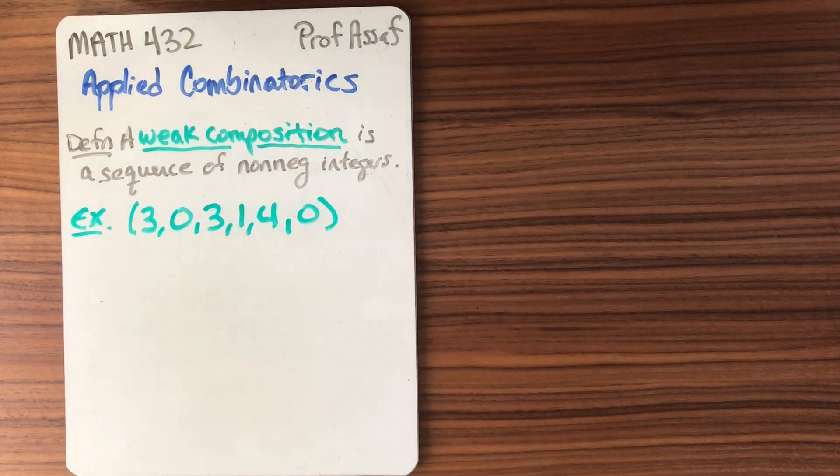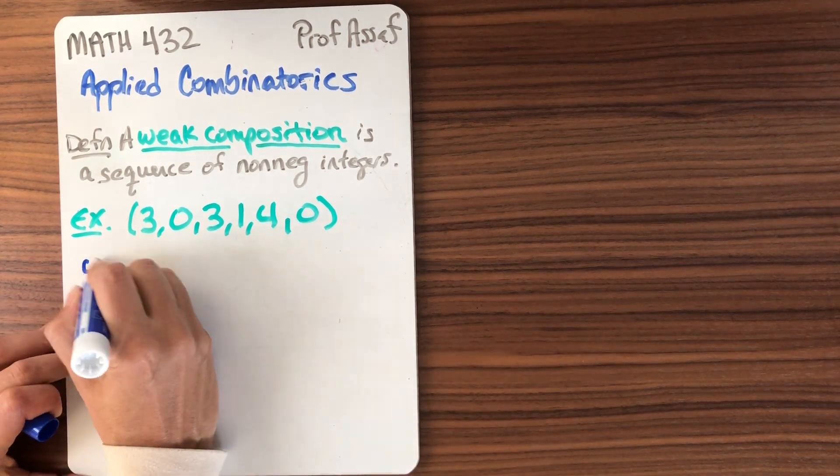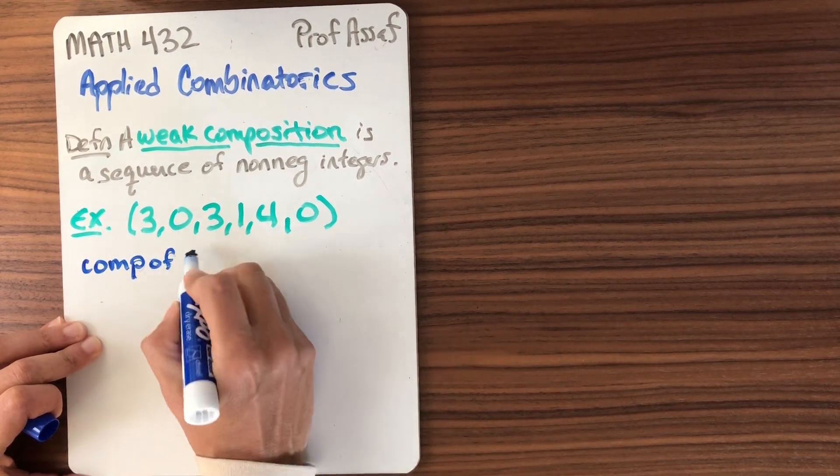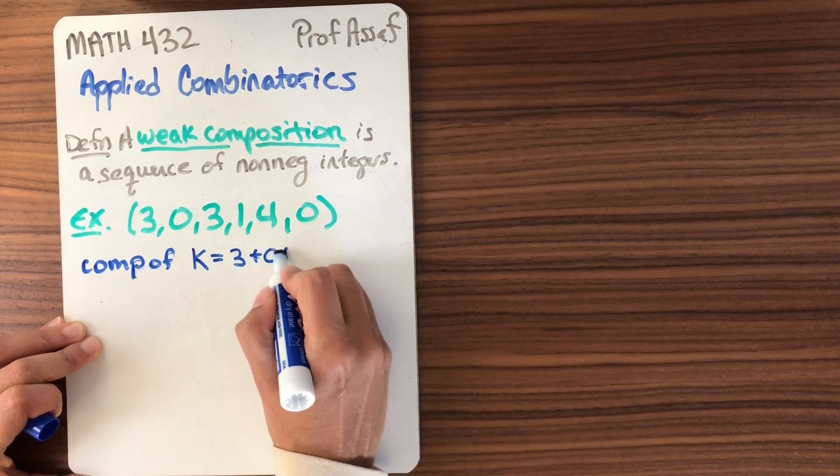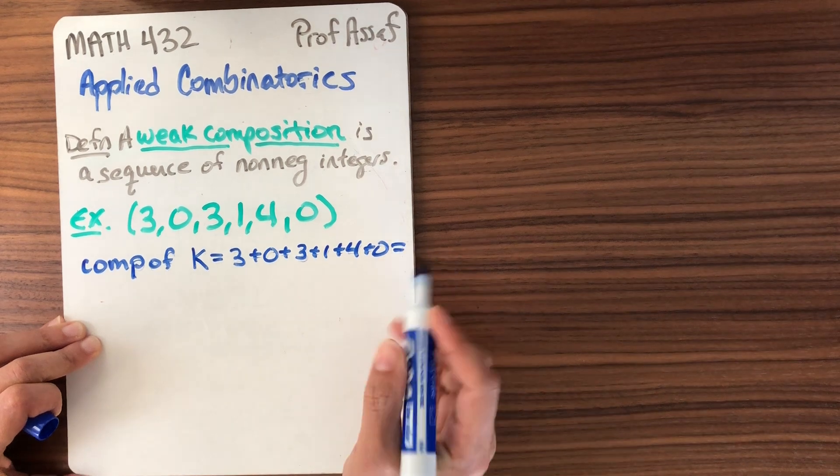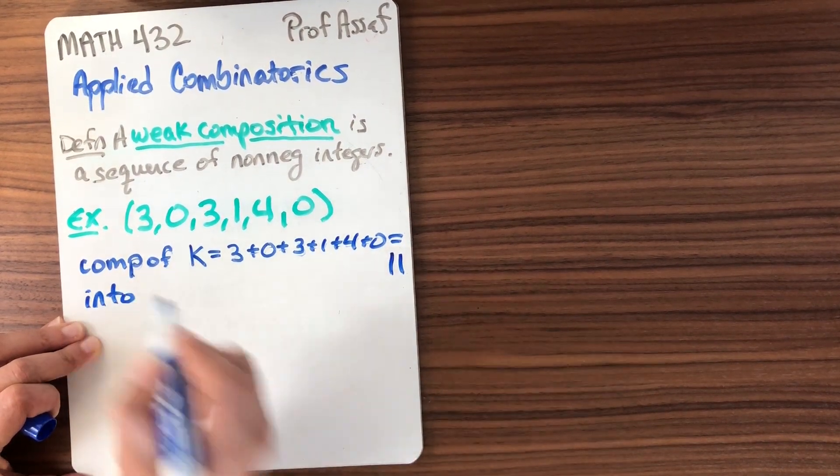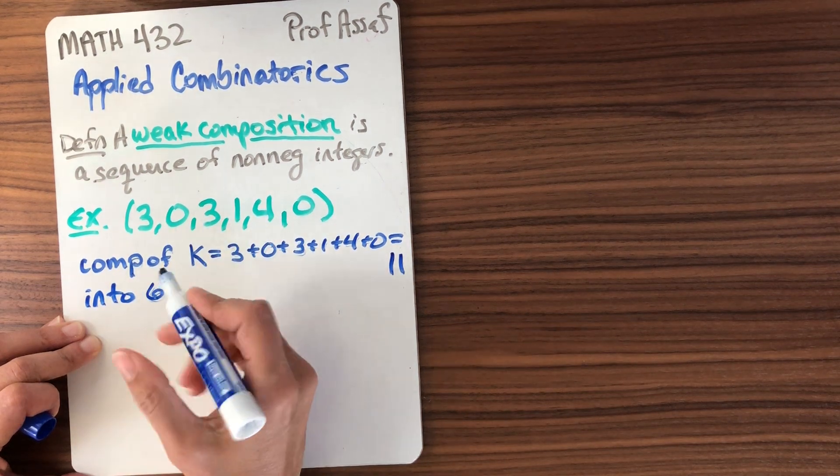We're going to say that this is a composition of the numbers that these add to. So this is a composition of, usually we're going to denote this, k equals 3 plus 0 plus 3 plus 1 plus 4 plus 0, which I believe is 11. And we'll talk about the number of parts, 1, 2, 3, 4, 5, 6, into 6 parts.